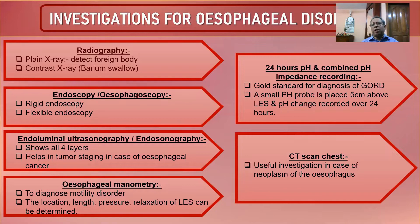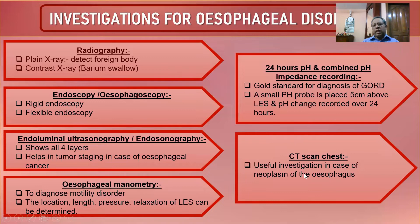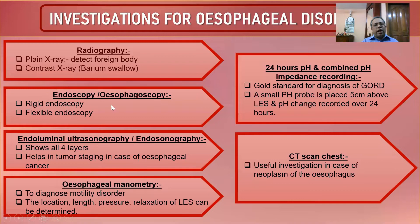Twenty-four hour pH combined with pH impedance recording involves a sensor in the esophagus measuring pH at the lower end over 24 hours — this is the gold standard for diagnosing gastroesophageal reflux disease. A small pH probe is placed 5 cm above the lower sphincter to record pH changes. CT chest is a useful investigation for esophageal neoplasms, delineating the lesion length, mediastinal infiltration, tracheal and bronchial involvement, and metastatic status.